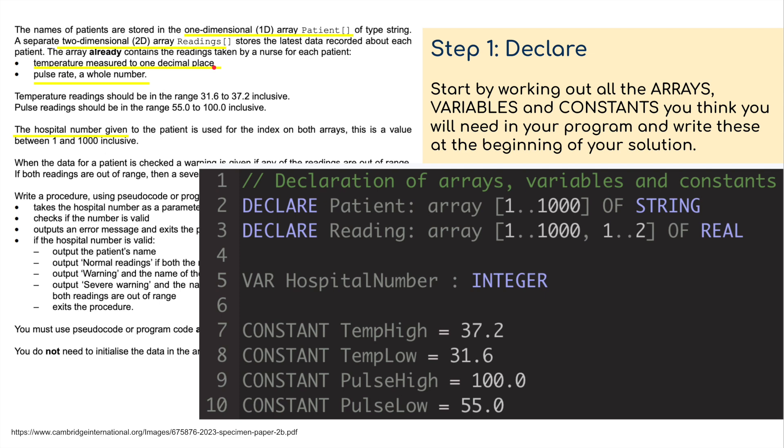If I look at the ranges, I've got 31.6 to 37.2 for the temperature and 55.0 and 100.0 inclusive for the pulse. That's my 2D array set up there. I've then got the hospital number, one to a thousand, that's going to be just an integer. Then I've got my constants: the temperatures, the highest and the lowest temp, the pulse high and the pulse low.